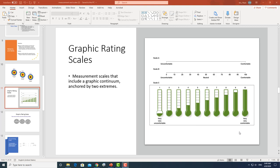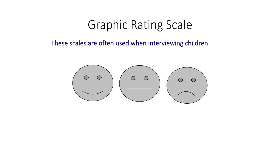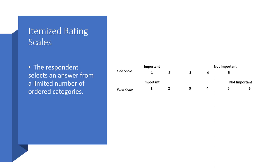Now let's continue our lecture on measurement and scales. In this video, we're going to look at a couple of commonly used scales. The first is called graphic rating scales. By the name, you can see that typically we use graphics to indicate two anchors on the left side and the right side. Graphic rating scales are typically used for children who are less cognitively capable, so we can give them simple choices in graphs.